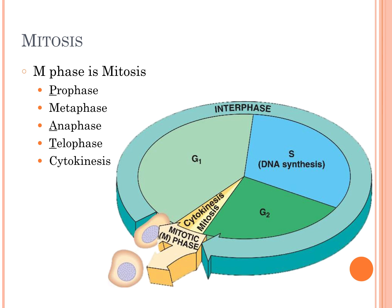Looking at another chart, you can see interphase is the longest part of the cell cycle. The M phase is broken down into smaller parts: during mitosis the nucleus divides — that's prophase, metaphase, anaphase, and telophase, or PMAT — and then cytokinesis is the part where the cytoplasm actually divides.